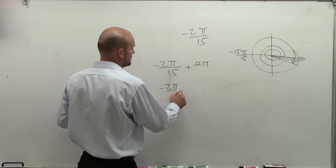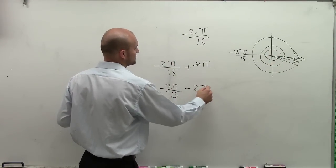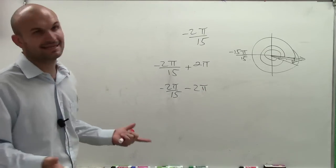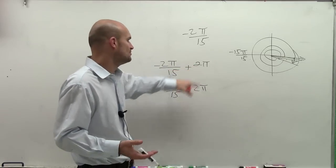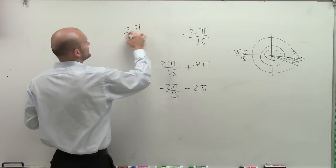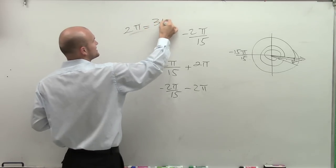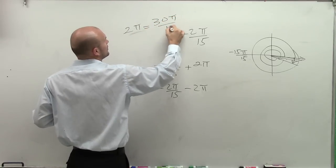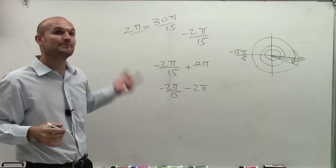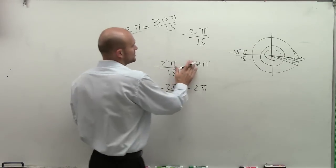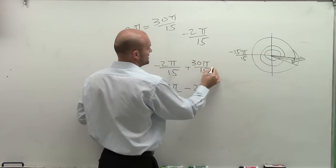I'm just going to do negative 2 pi over 15 minus 2 pi. Now, so how are we going to relate this? How do I subtract 2 pi? Well, remember, 2 pi is, in terms of 15, is the same thing as 30 pi over 15, right? Because that can be reduced to 2 pi. 30 divided by 15 is 2. So I'm just going to rewrite this as 30 over 15.